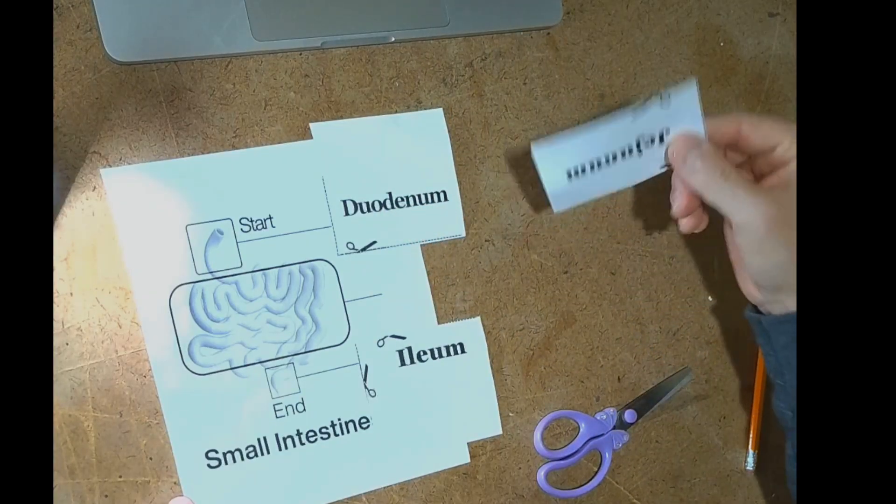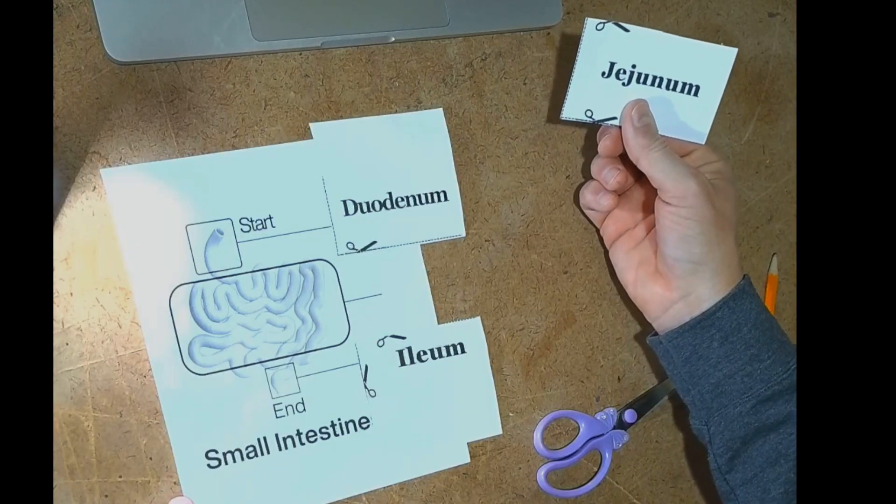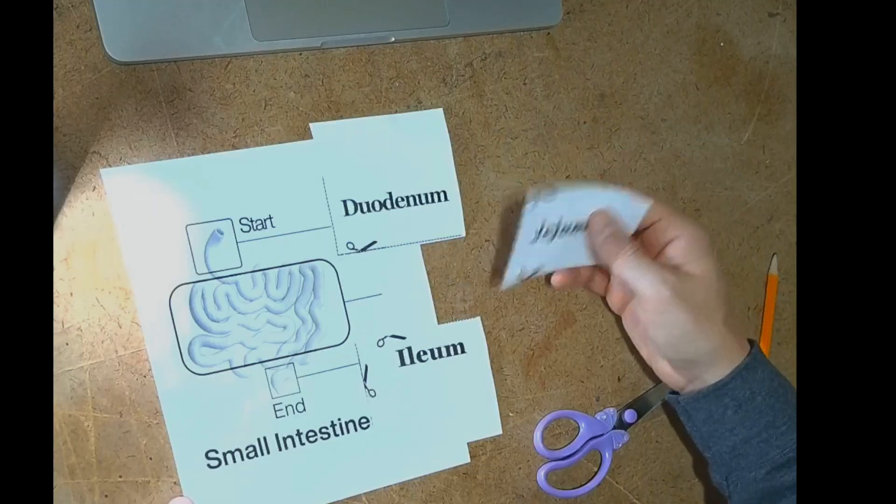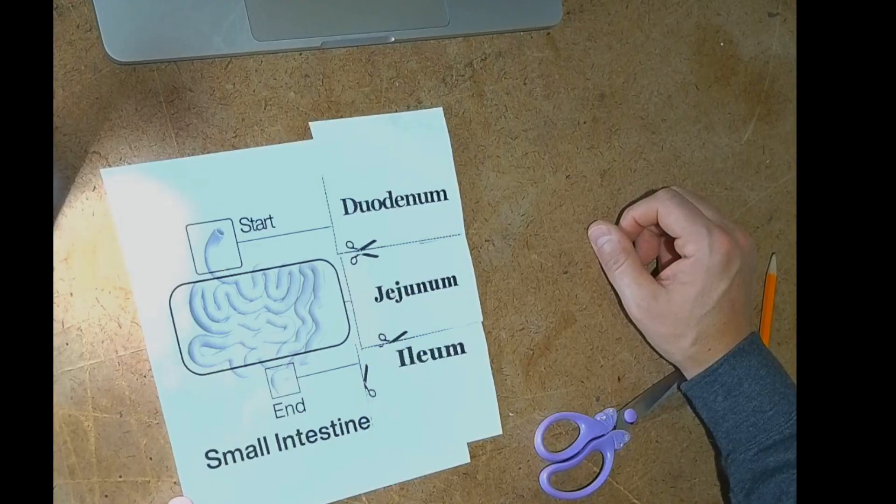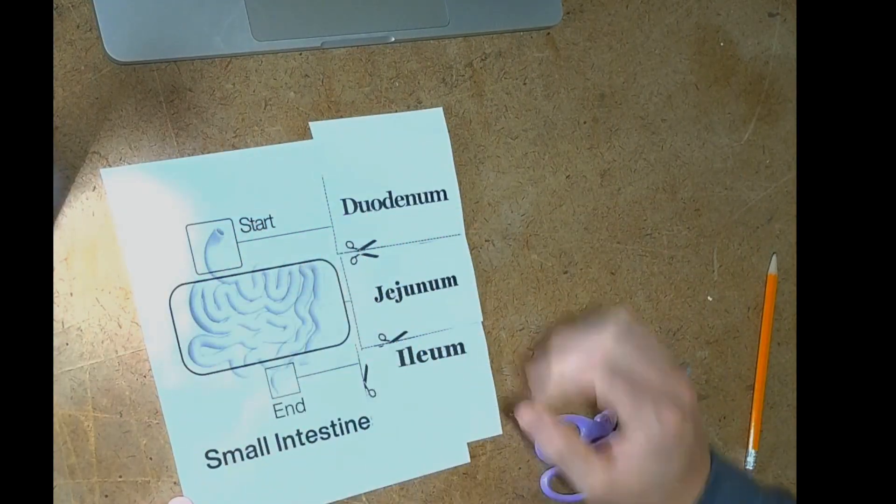And our last one is going to be the jejunum. The jejunum is the middle section. And just like that we've labeled and organized the small intestine with their names.